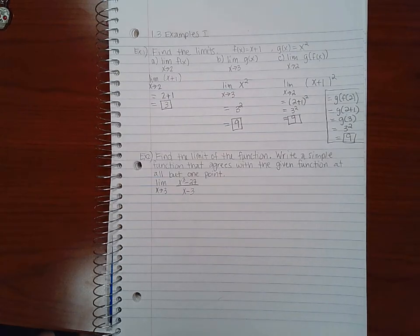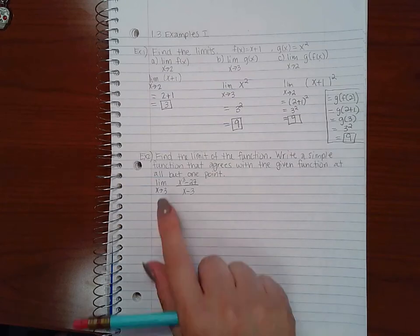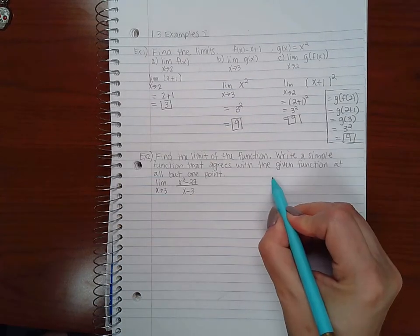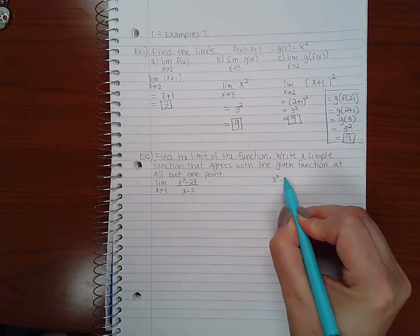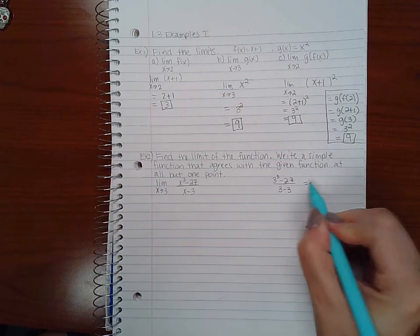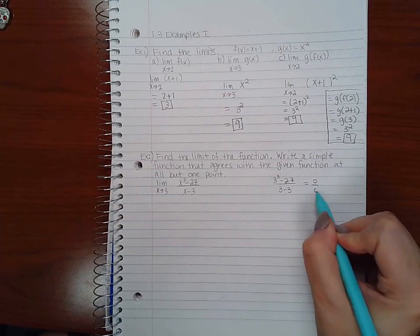Now example two is: find the limit of the function, write a simple function that agrees with the given function at all but one point. So I cannot do direct substitution in this problem because if I did I would get three cubed minus 27 over three minus three, which ends up giving me zero over zero.